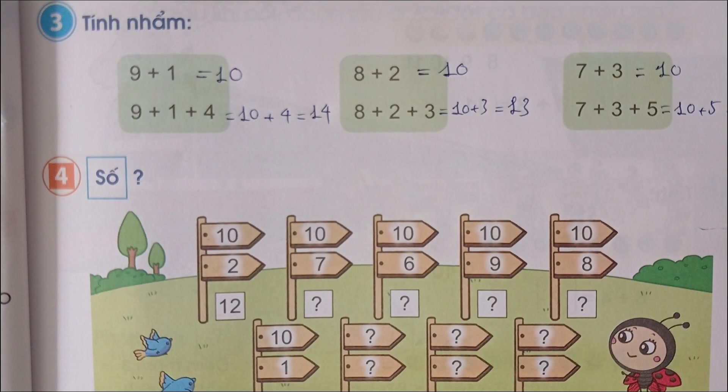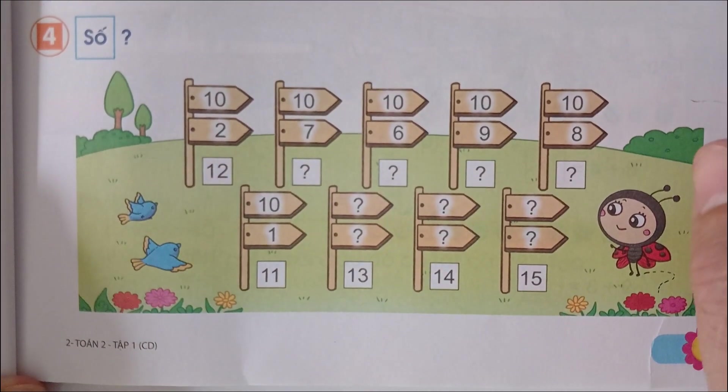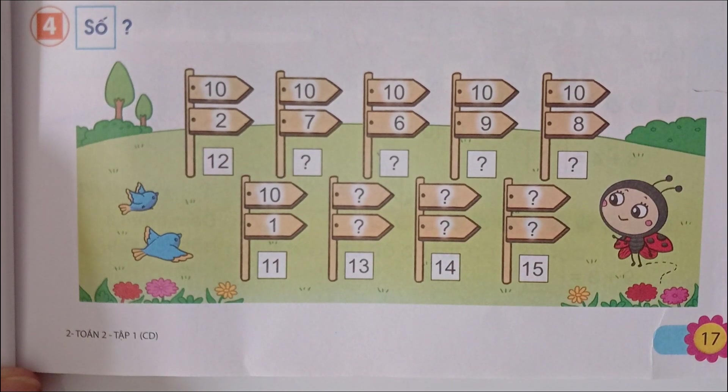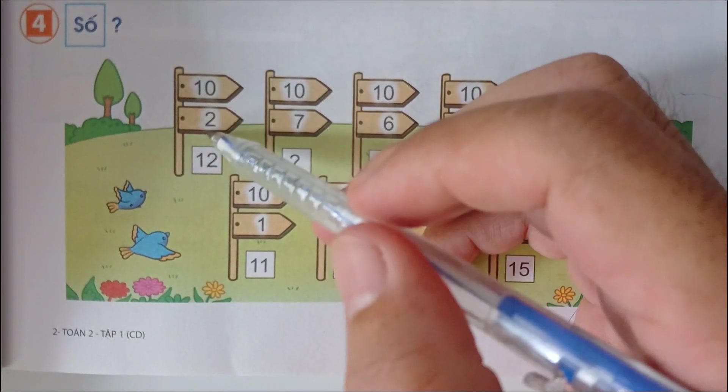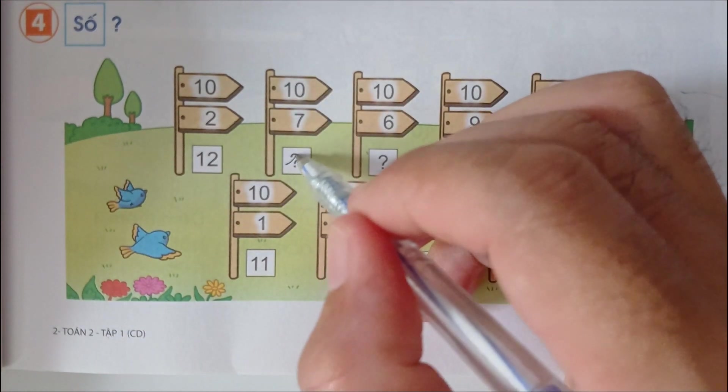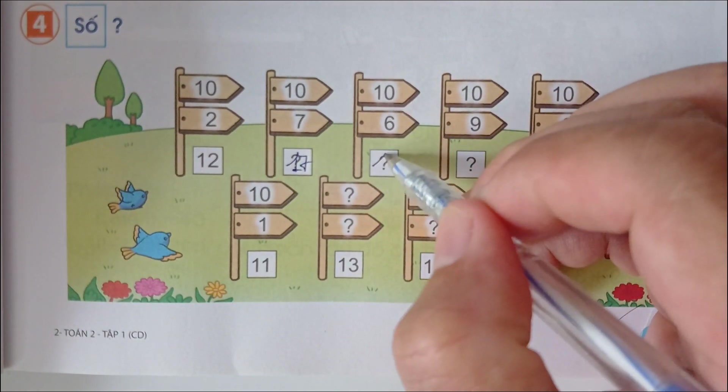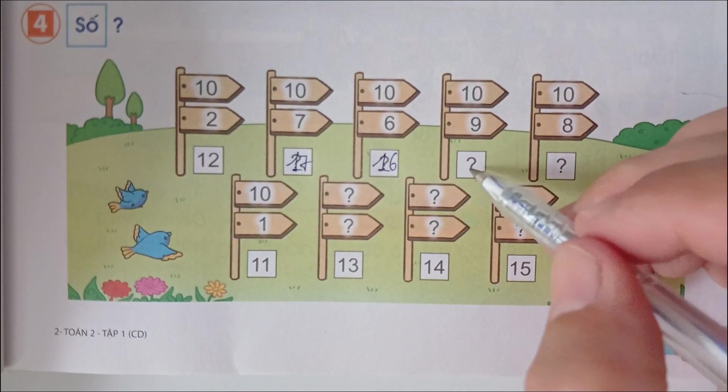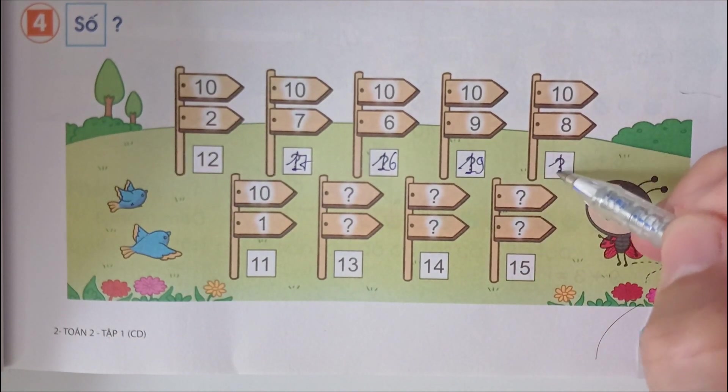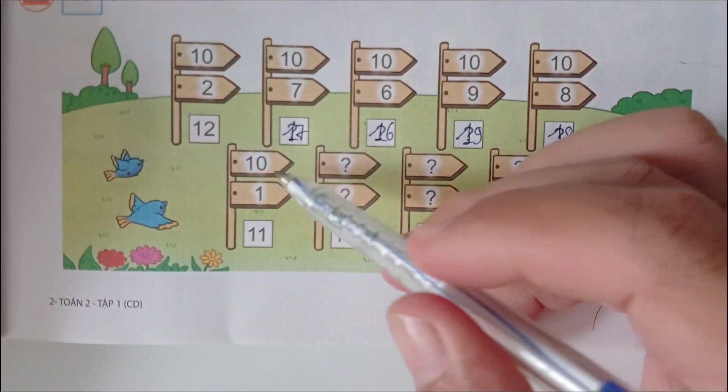Bài số 4, số: 10 cộng 2 bằng 12. 10 cộng 7 bằng 17. 10 cộng 6 bằng 16. 10 cộng 9 bằng 19. 10 cộng 8 bằng 18. 10 cộng 1 bằng 11.